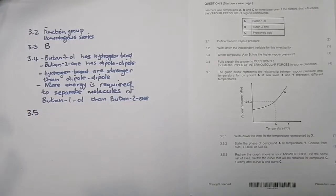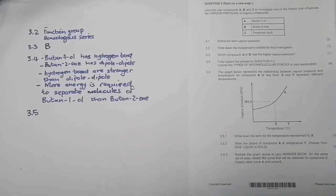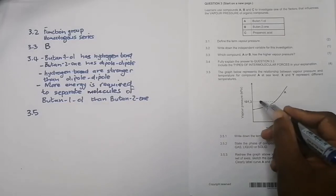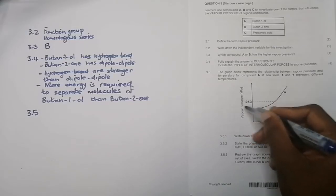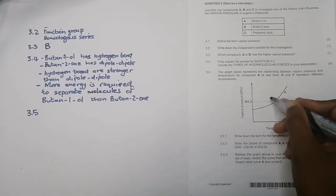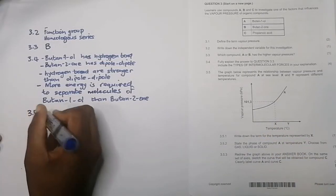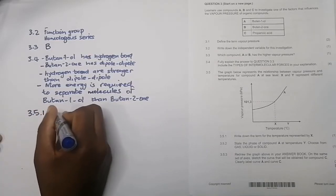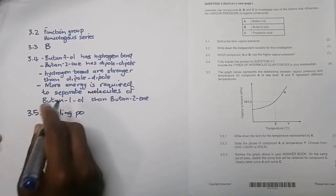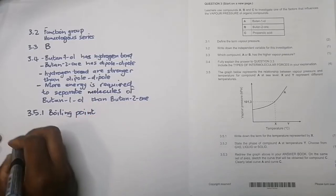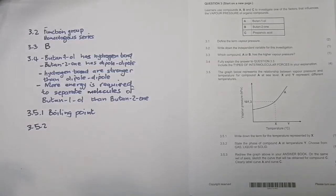For 3.5, they give us a graph showing the relationship between vapor pressure and temperature for compound A at sea level. X and Y represent different temperatures. For 3.5.1, they ask for the term for the temperature at X. You can see the vapor pressure there is 101.3 kPa, which is atmospheric pressure. The temperature at which vapor pressure equals atmospheric pressure is the boiling point.